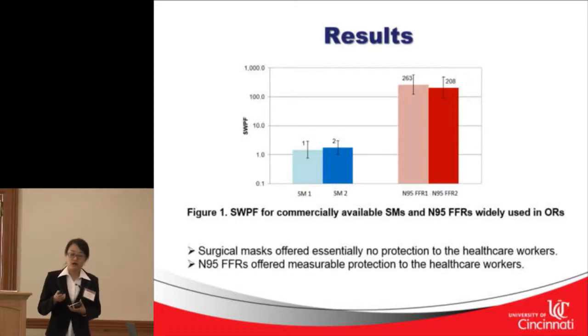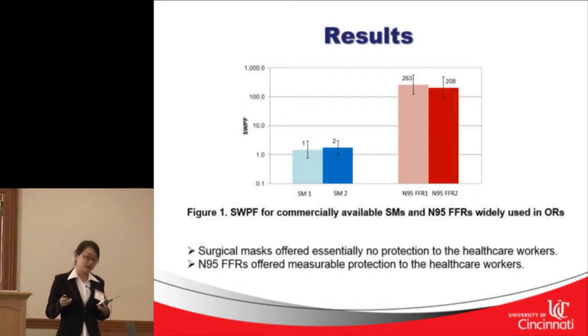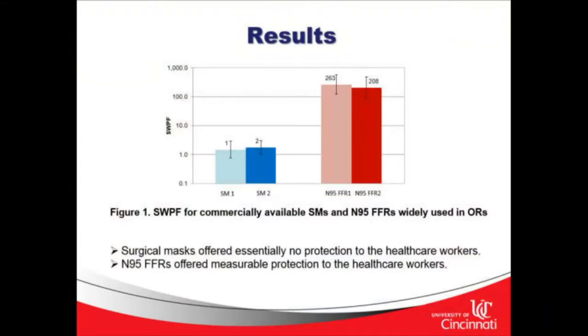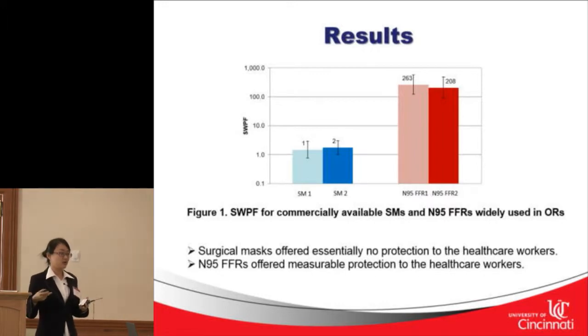The results show that the average SWPF value for the surgical mask is only about 1 to 2, meaning outside concentration is just one to two times higher than inside concentration. This indicates that surgical masks barely offer protection to workers. In contrast, the N95 FFR offered much higher protection with an average SWPF of about 200, meaning if there are 200 particles outside, only 1 particle is found inside.